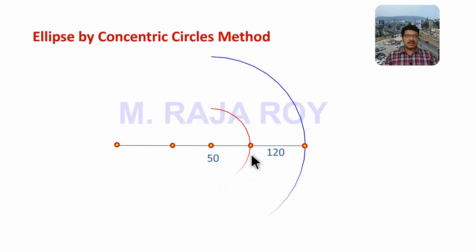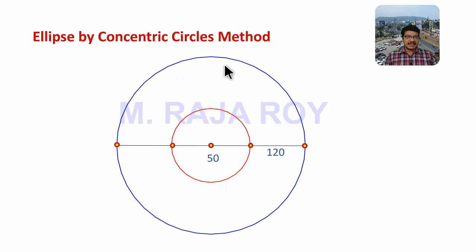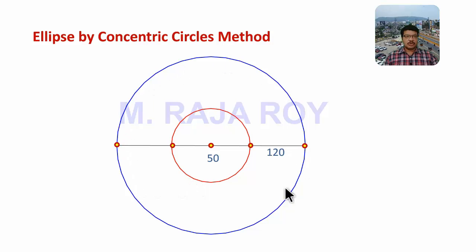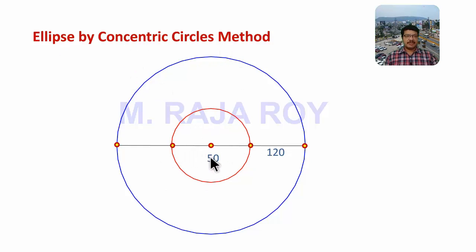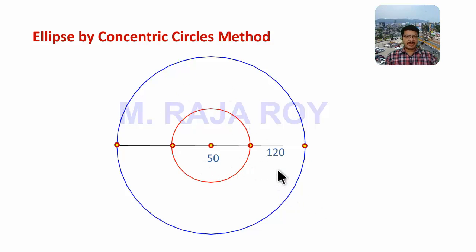Now take the major axis length as diameter and draw one circle. Take the minor axis length as diameter and draw another circle. These two circles are concentric circles. That is why this method is called the concentric circles method. These axis lengths are not necessary now because we have already drawn the circles.